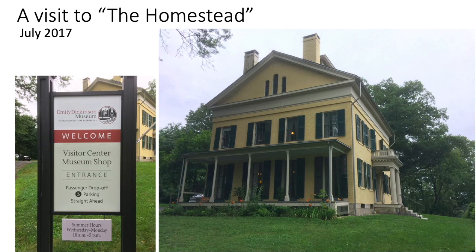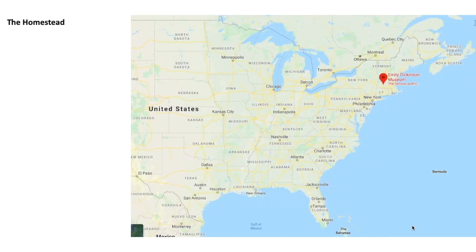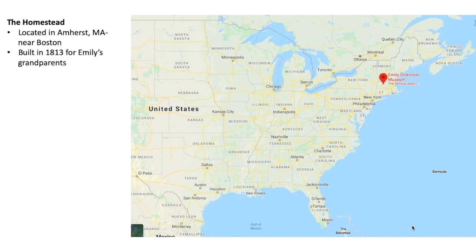These are pictures I took on my visit to the homestead in July of 2017. It is now the Emily Dickinson Museum. This is the house where Emily lived. Up in the corner is Emily's bedroom — those are the windows she would look out of as she wrote and lived her life. The homestead is located in Amherst, Massachusetts, near Boston. It was built in 1813 for Emily's grandparents, and she was born there in 1830 and died there in bed in 1886.